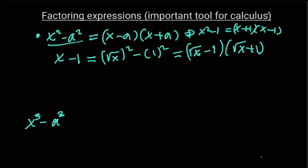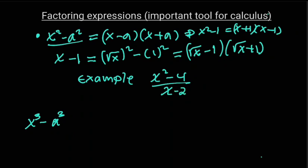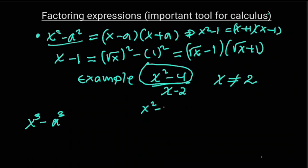For example, simplify x squared minus four over x minus two, provided that x is not equal to two. The first thing you do is factor x squared minus four. Since x squared minus four is the same as x squared minus two squared, we can apply the difference of squares formula.